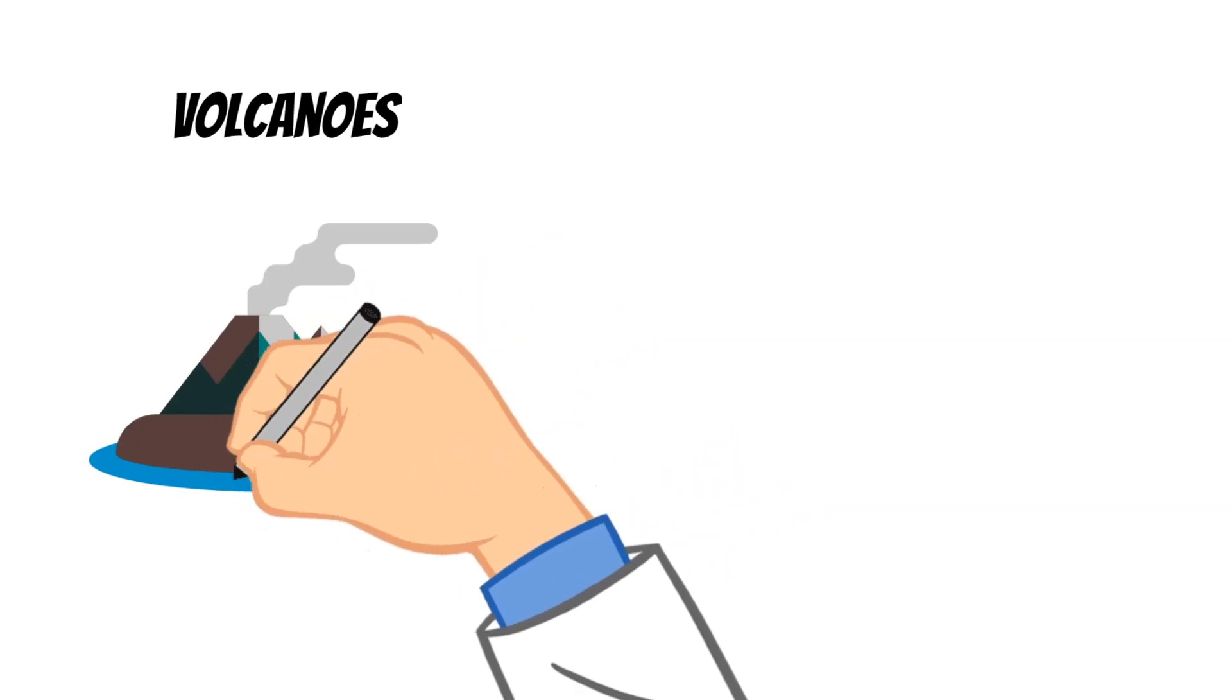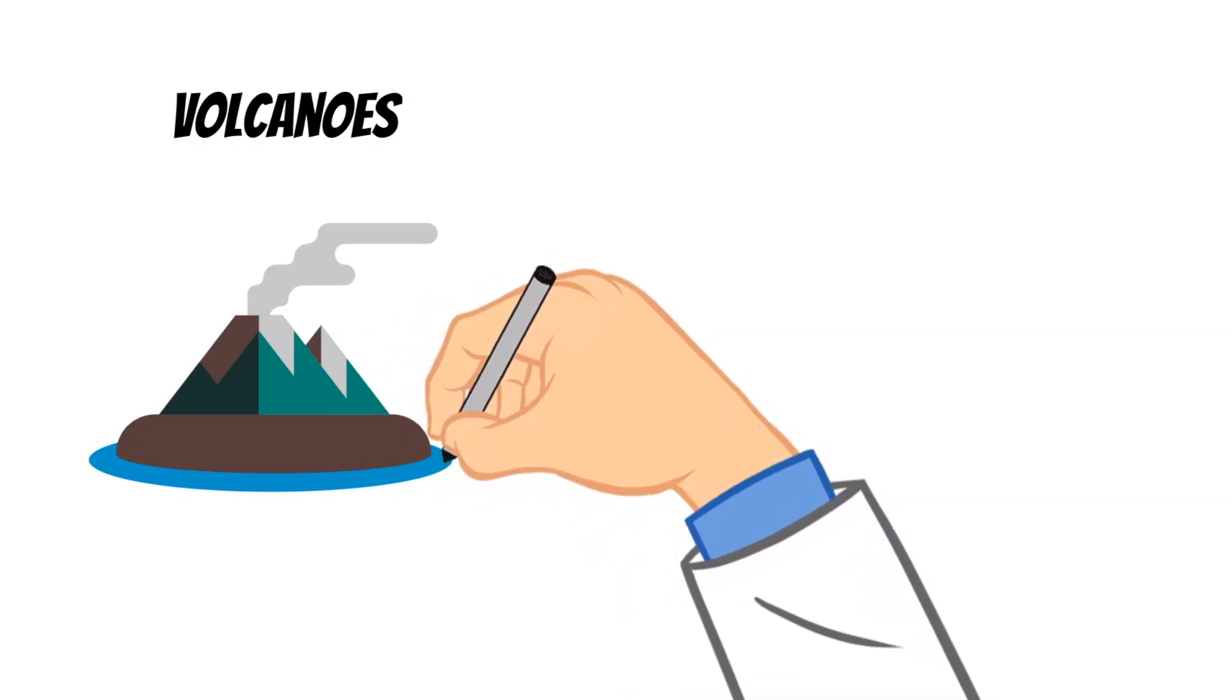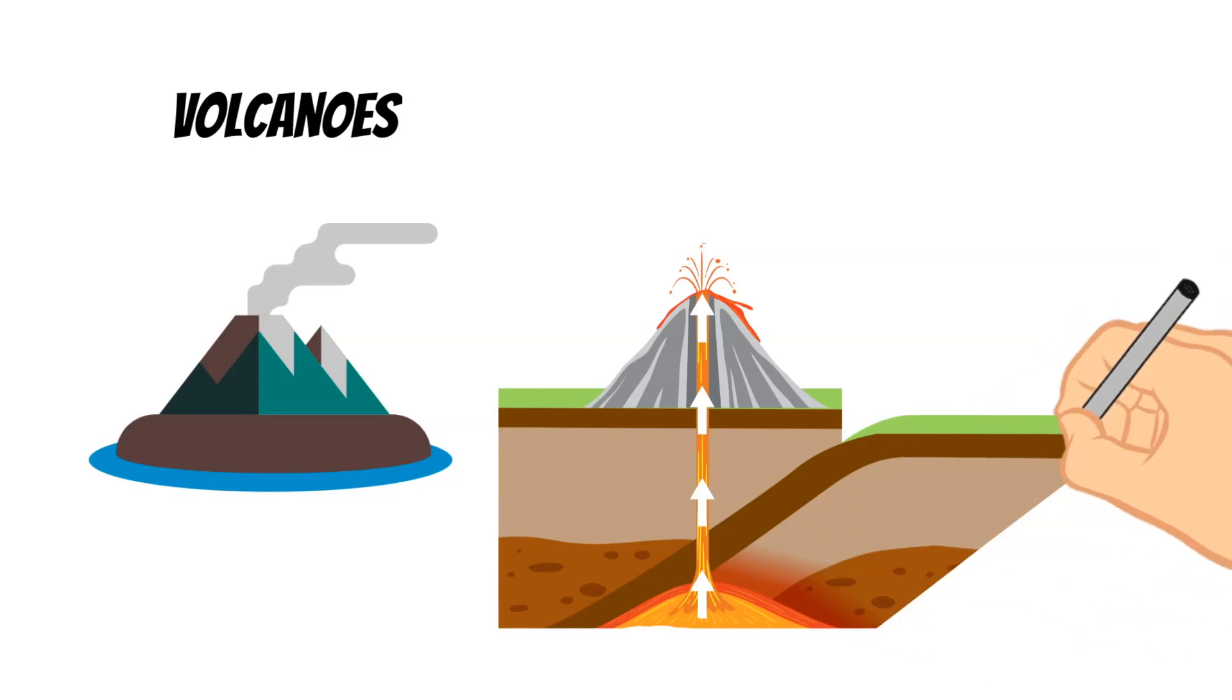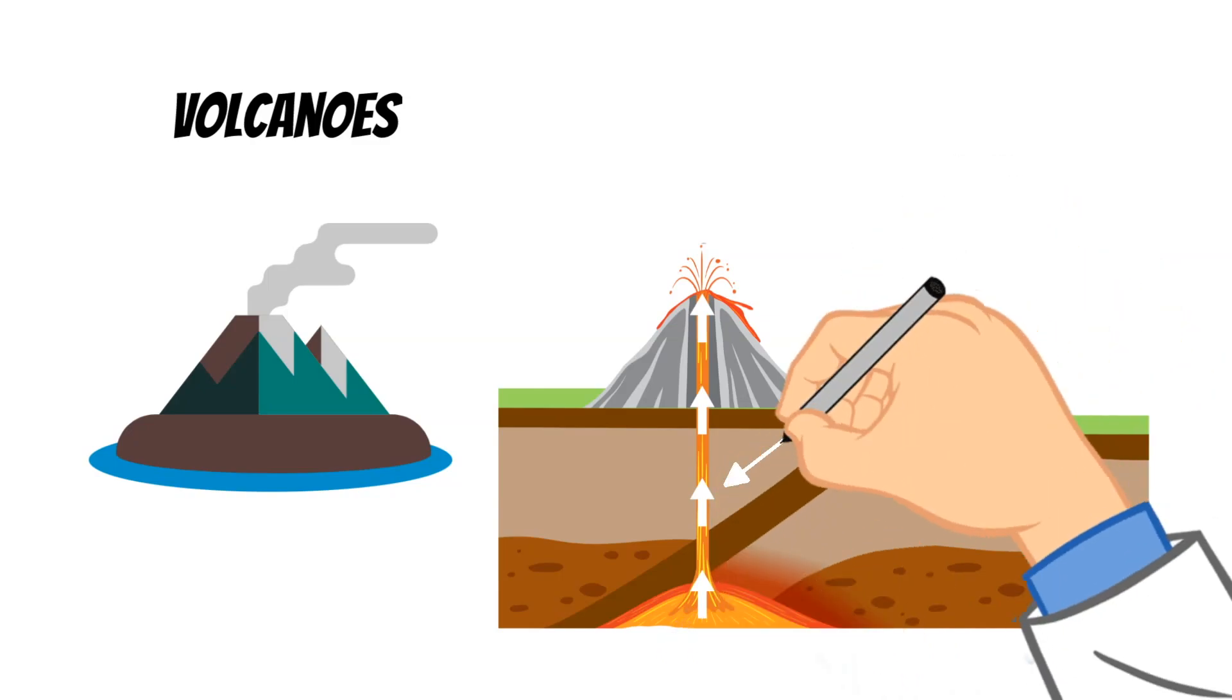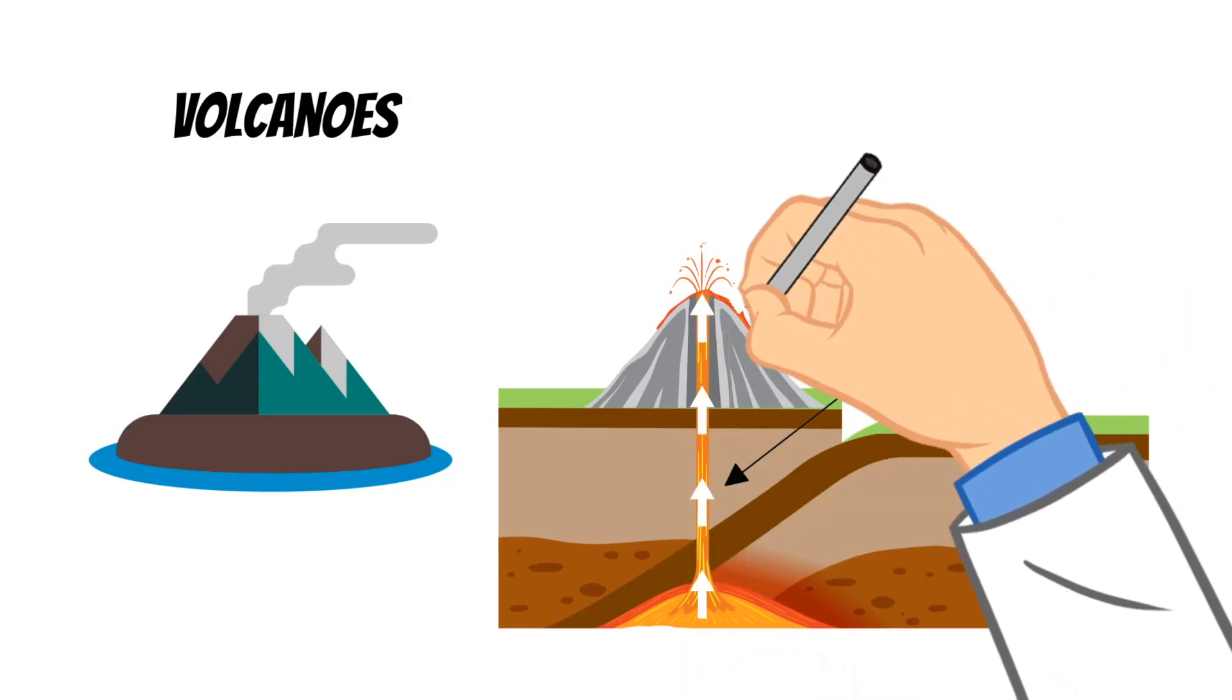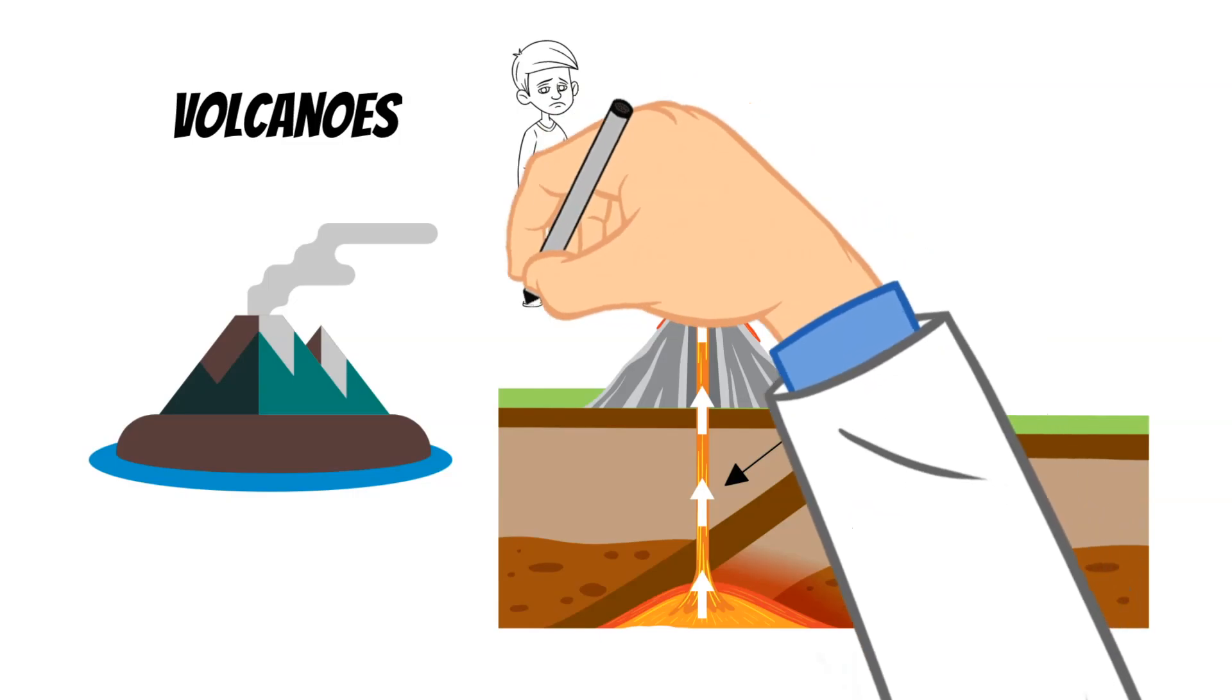A volcano is an opening in the earth's crust. And this opening allows hot liquid rock from deep, deep down in the earth to erupt to the surface. And this is called magma. When a volcano erupts, magma will rise to the surface, but not just magma, but hot gases as well. And this material can slowly flow out of this crack or hole in the ground, or it could explode suddenly into the air.